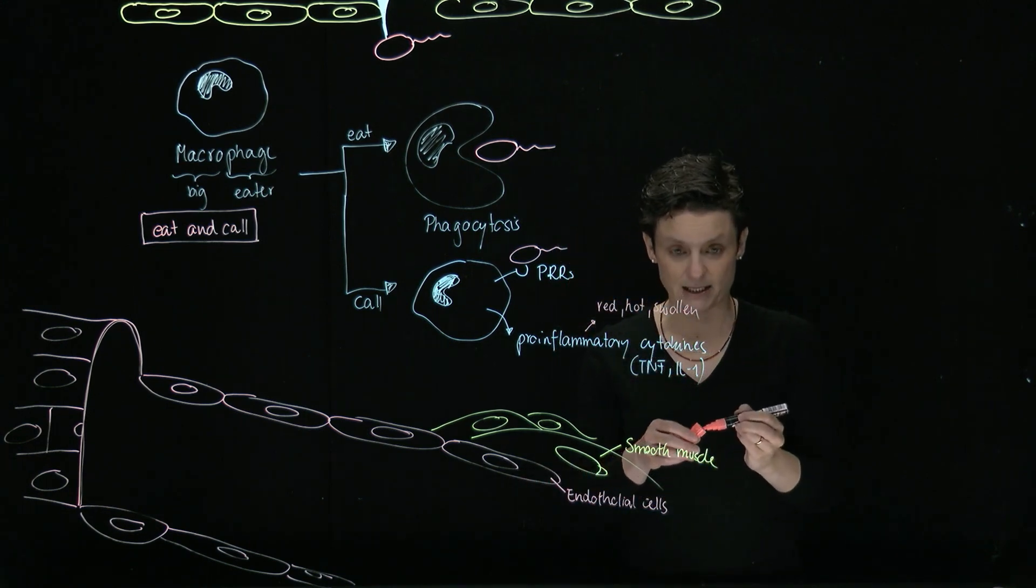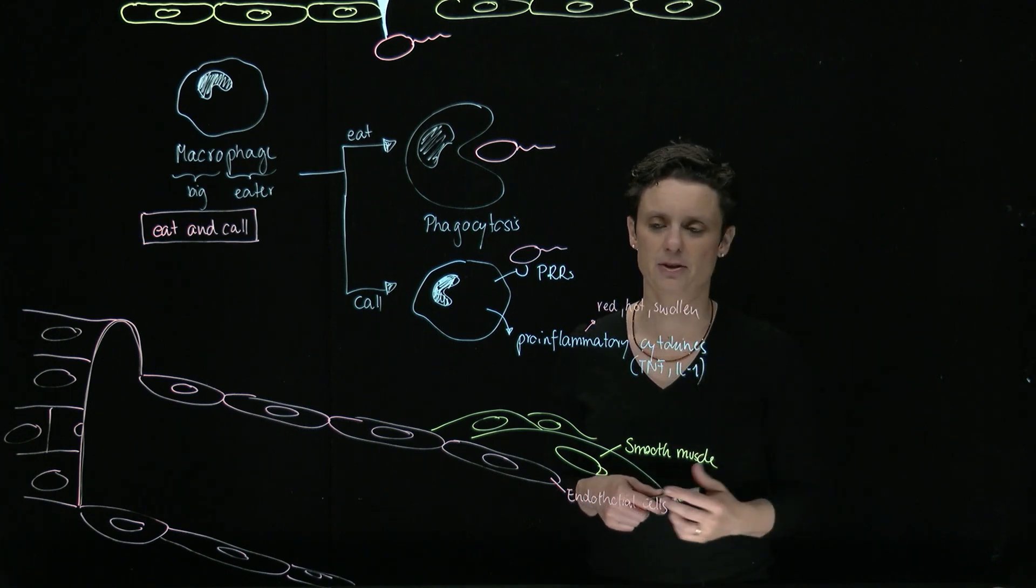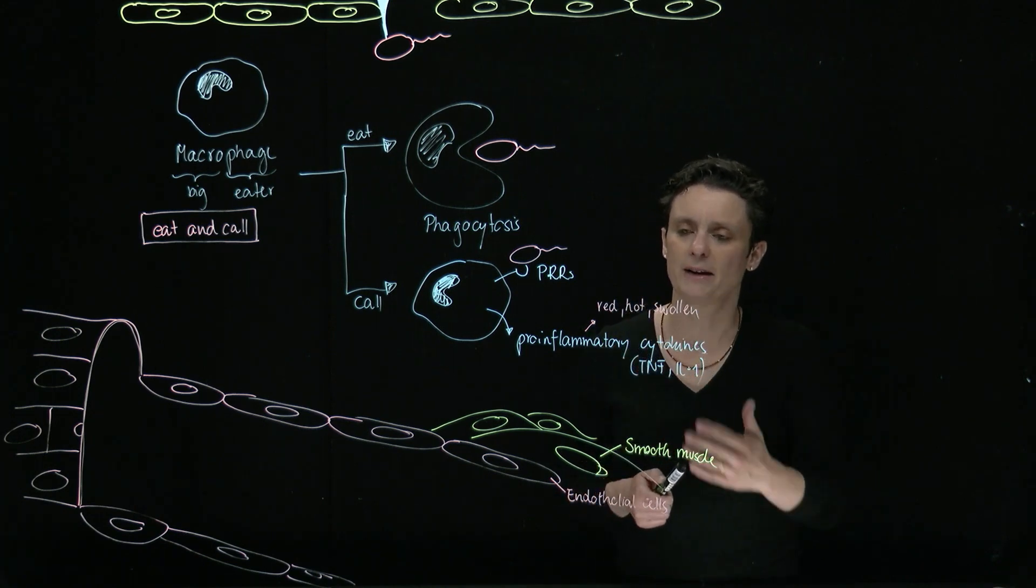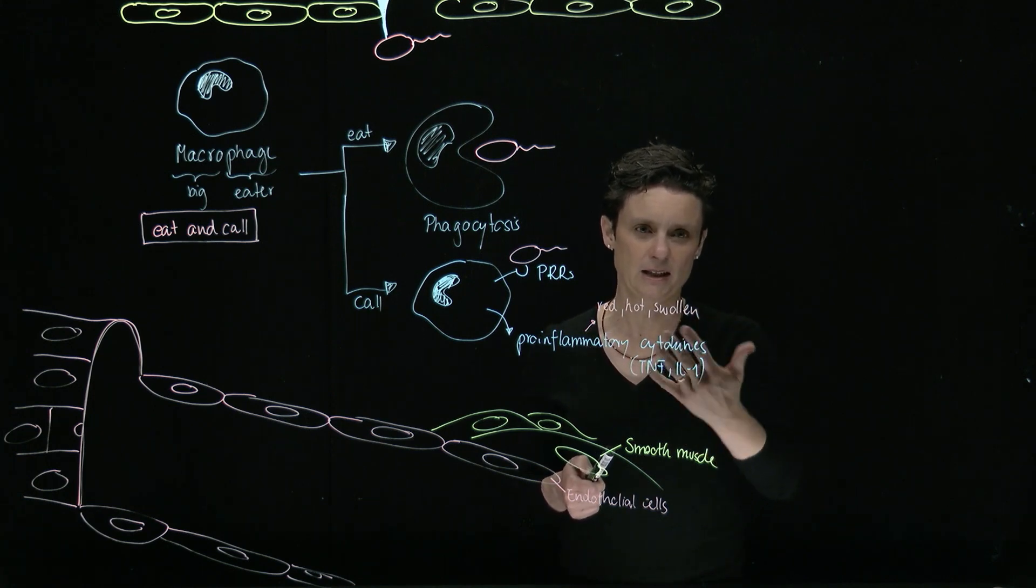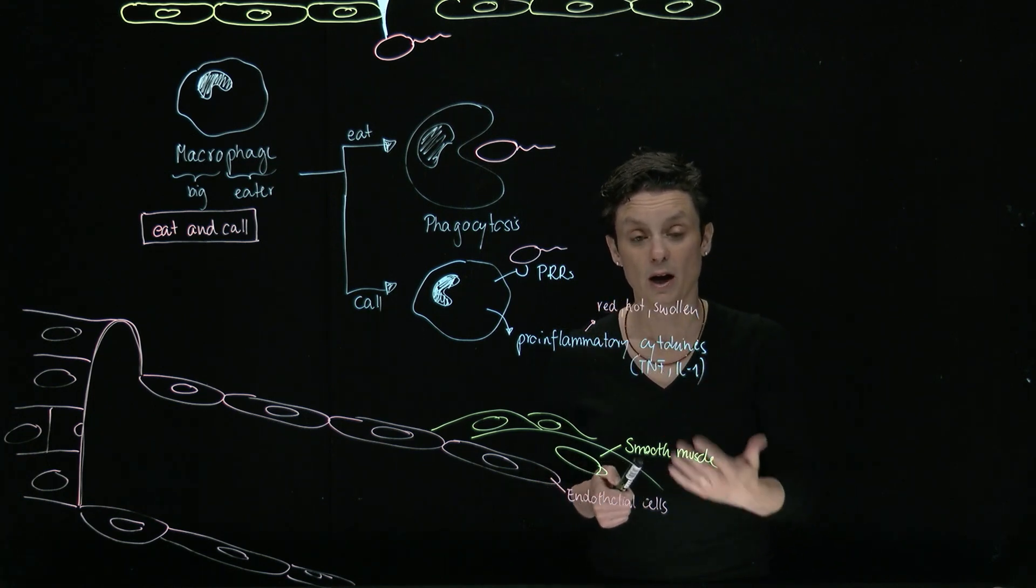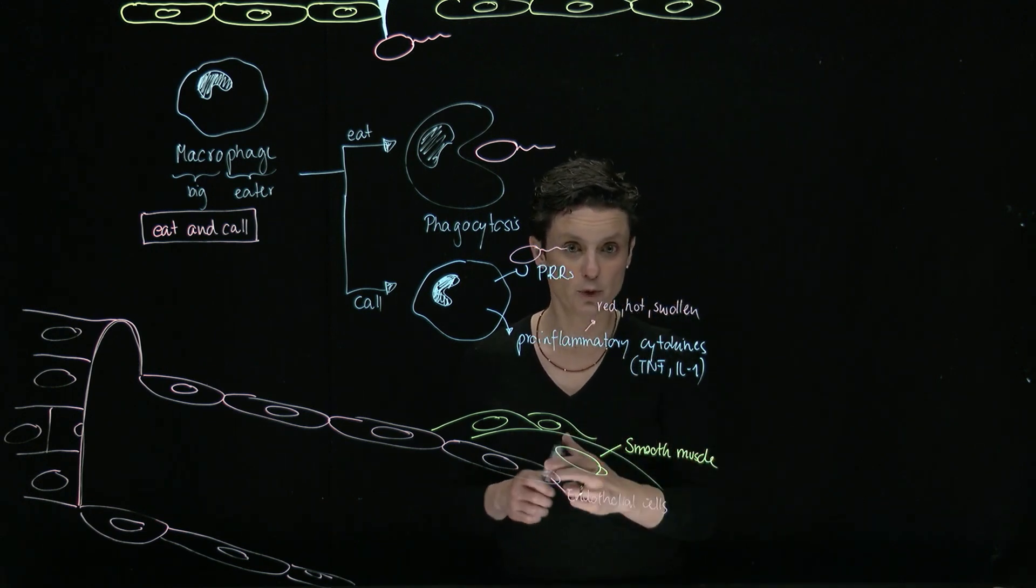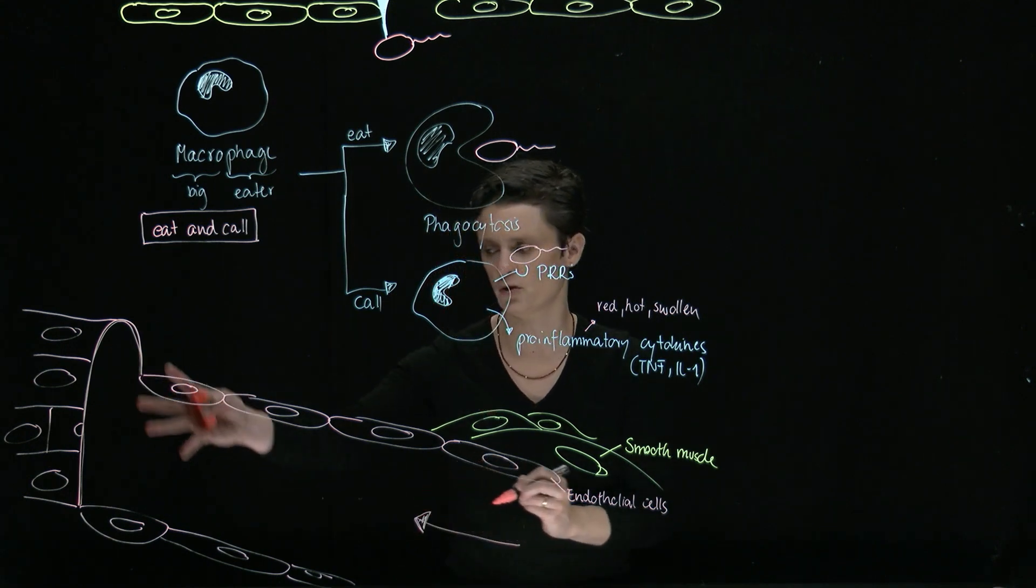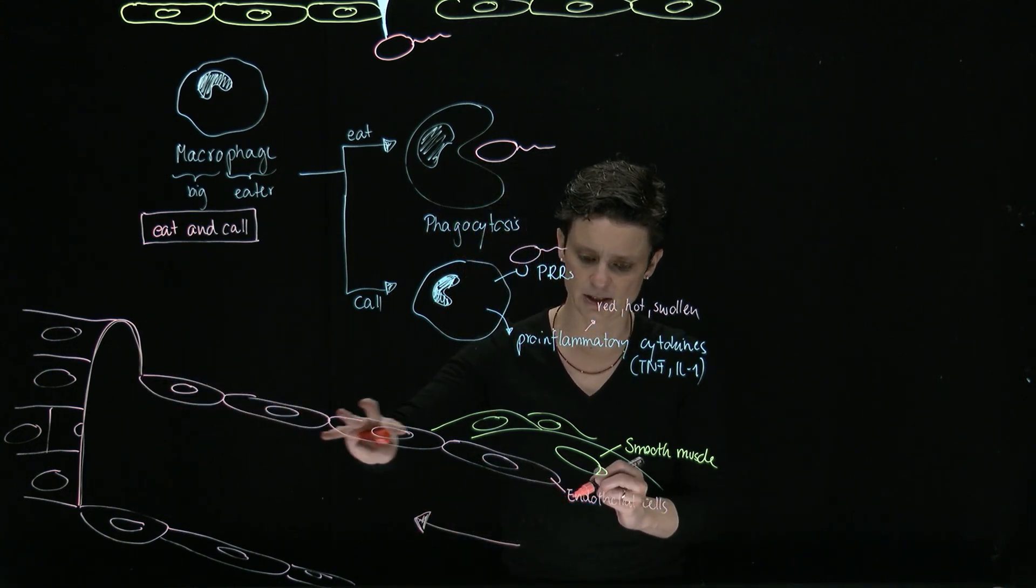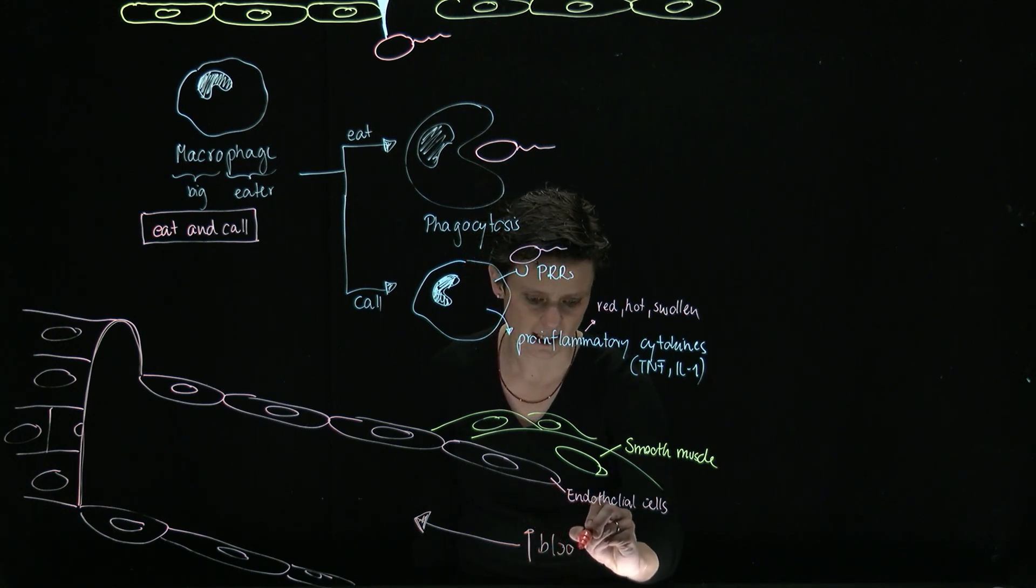And how is it mediated? How is that helping us to get rid of the pathogen? Well, if TNF triggers redness, heat, and swelling, what does it do? It mediates arteriolar dilation. So the smooth muscles are going to dilate. As a consequence, in a nearby blood vessel, here's the capillaries, these are the endothelial cells. Then there's going to be increased blood flow because it's going to mediate vasodilation.